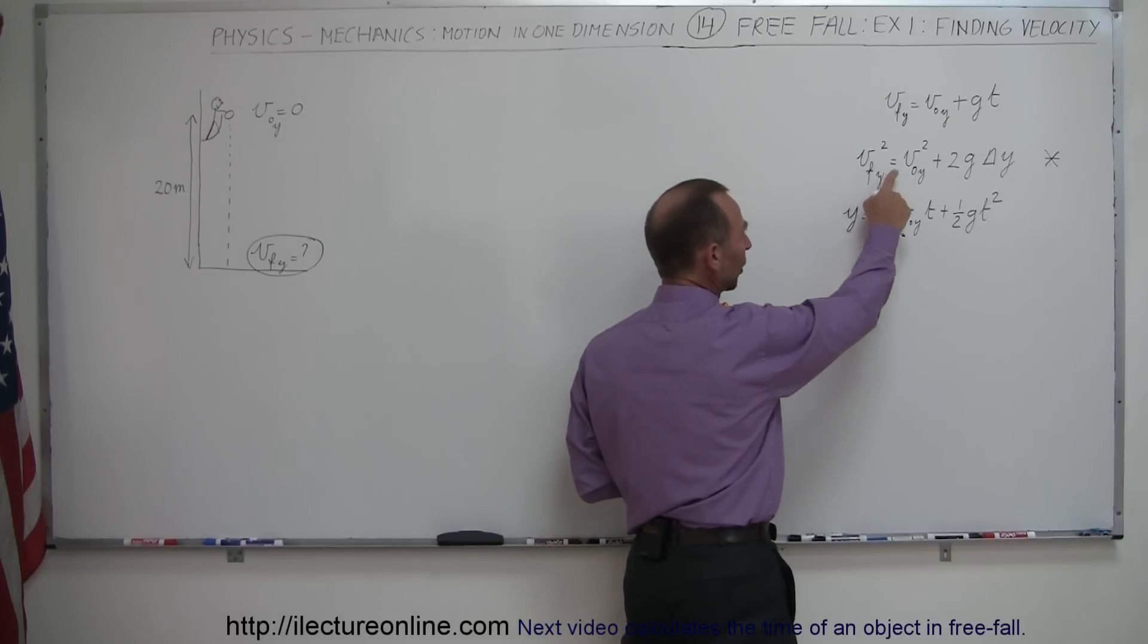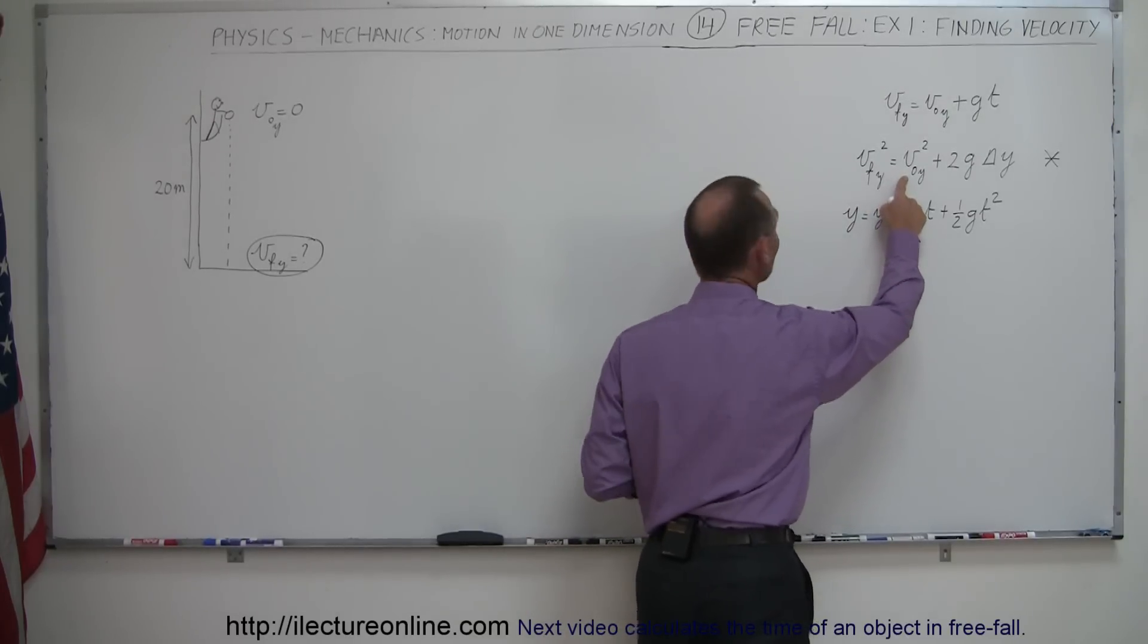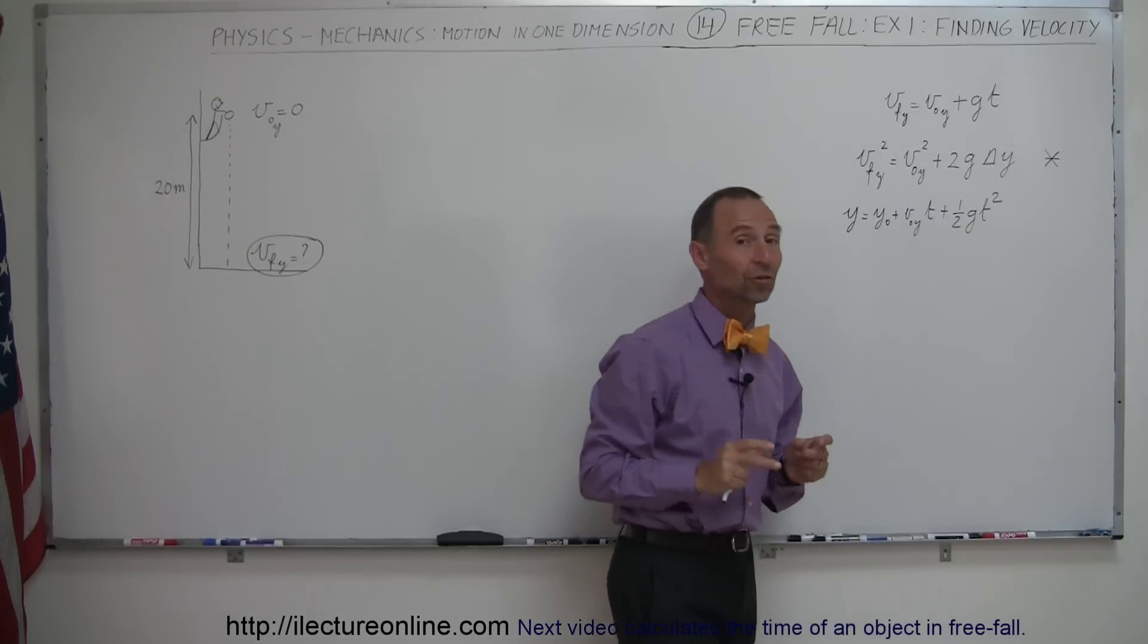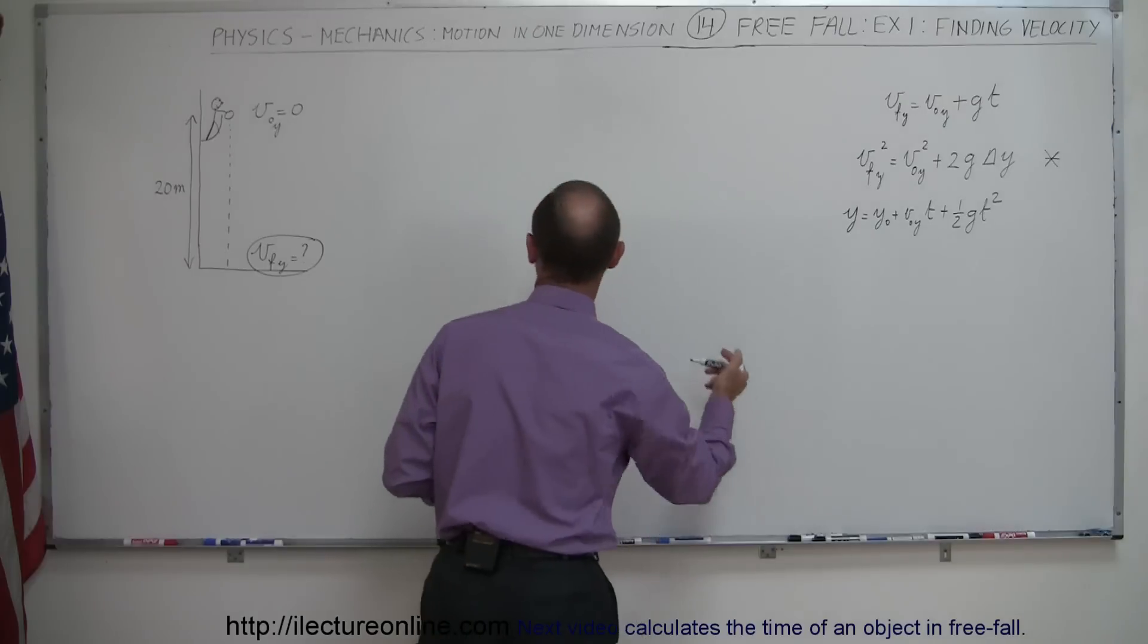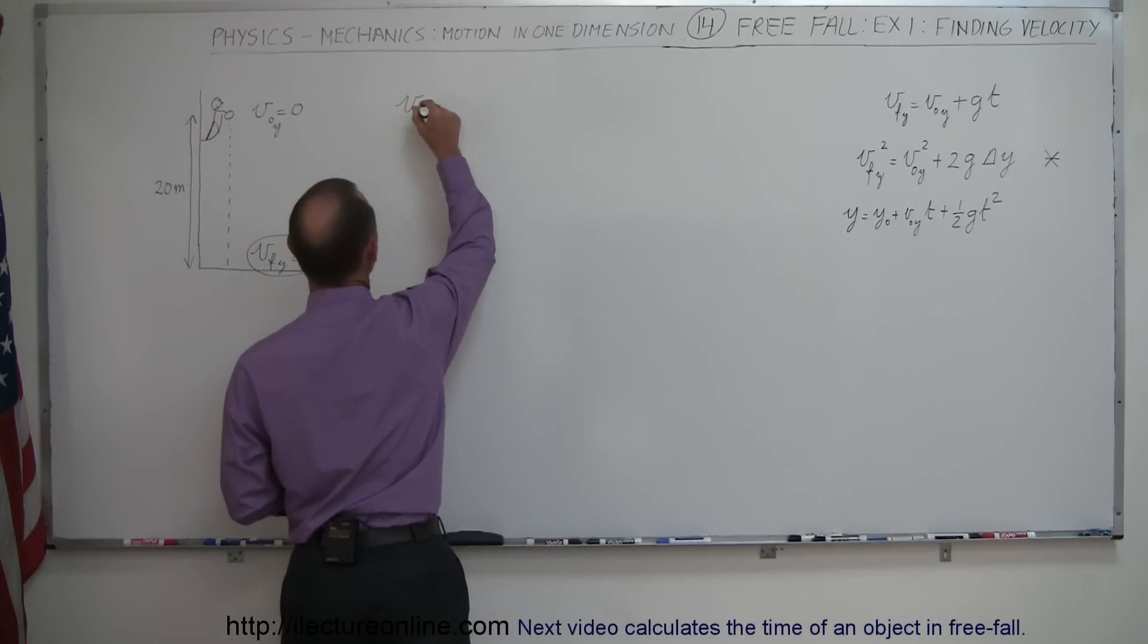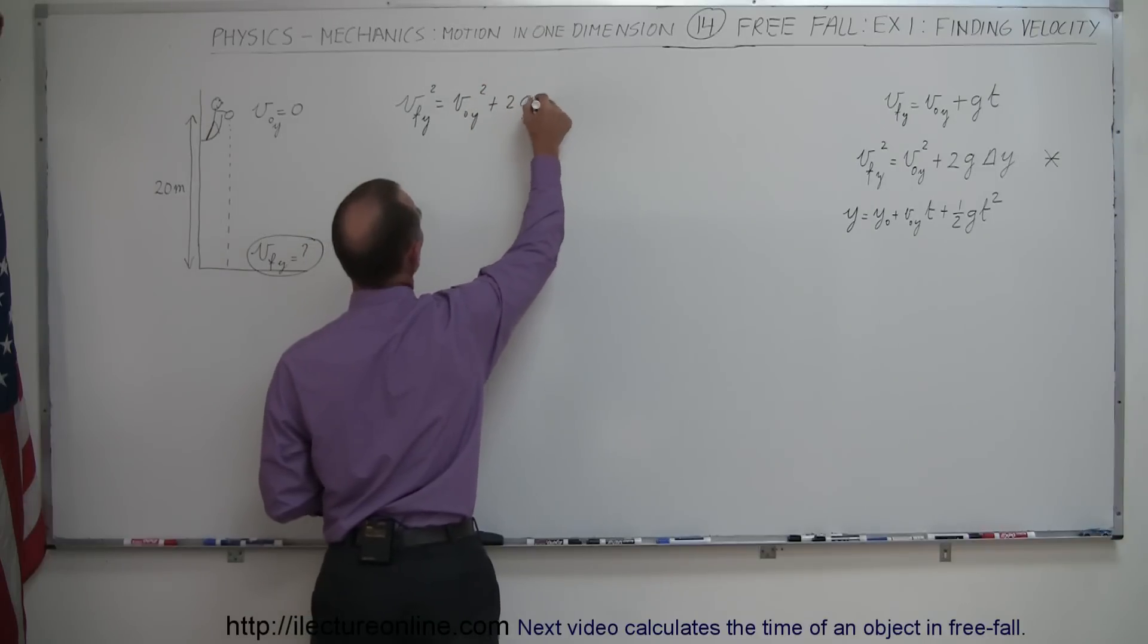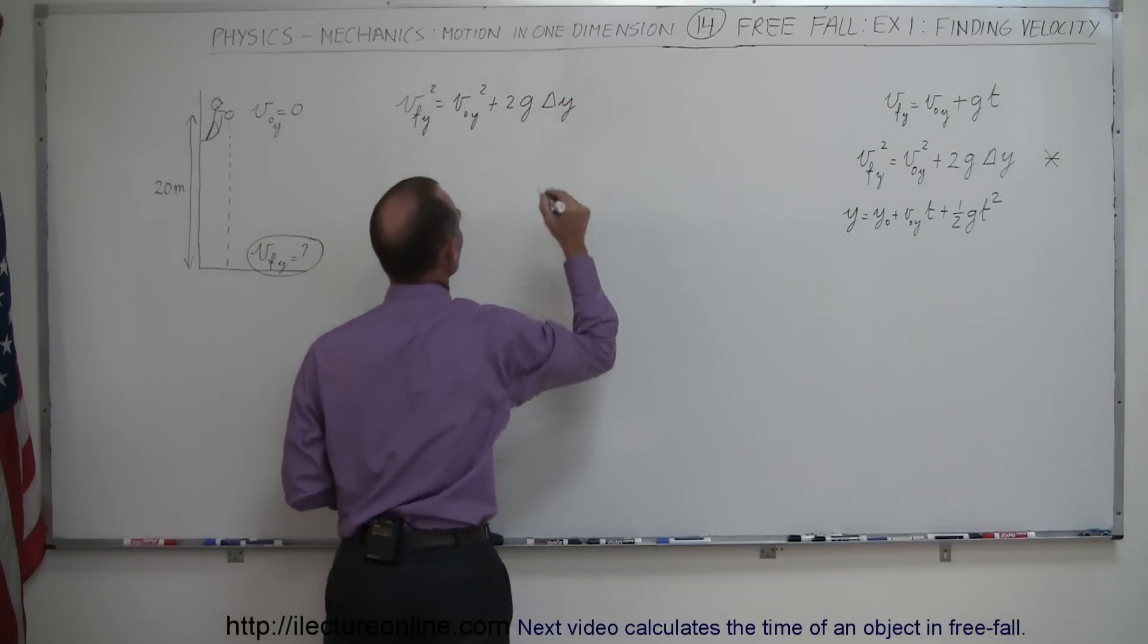We're trying to find v-final. We're given v-initial, which is zero. We know the acceleration due to gravity and the height difference, so that equation will work for us. We have v-final in the y-direction squared equals v-initial in the y-direction squared plus 2 times g times the change in height, delta y.